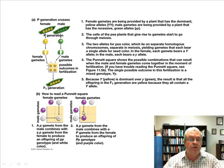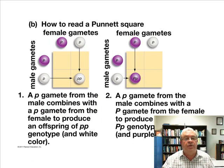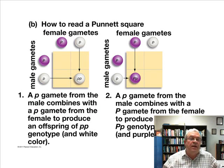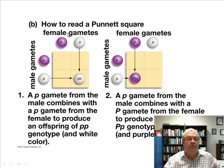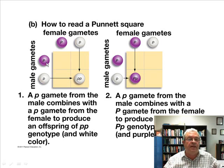And there's also a Punnett Square illustrated here. Now it's not necessary to get the male gametes always on the left side and the female gametes on the top. It's just the gametes from one parent on one side, and the gametes from another parent on an adjacent side. That's very important — to get the gametes on an adjacent side, not across from each other.